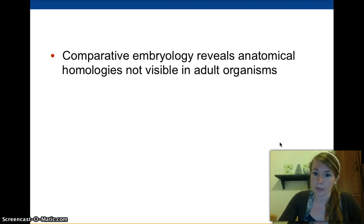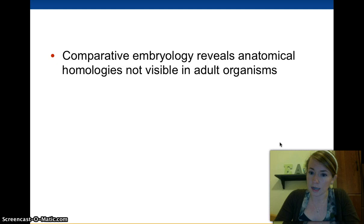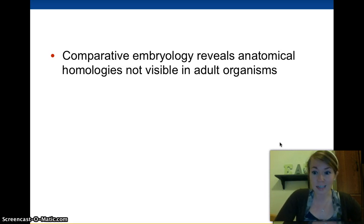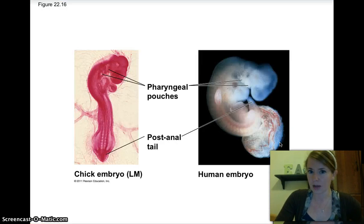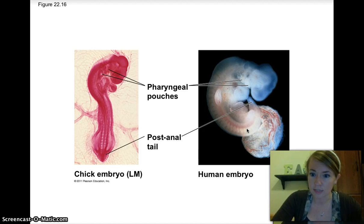There's also comparative embryology, which means that if you look at the embryos of a lot of living things, they all look the same early, early in development. Obviously a full-term baby is going to look like a human, but very early in development it's going to look the same as any other animal baby, basically. There are anatomical homologies — structures that are the same — that are not visible in adult organisms. Here's a chick embryo that will grow into a chicken, and here's a human embryo that will grow into a human. How much alike do they look? It's kind of scary.